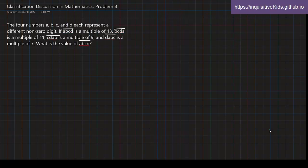Alright, so A, B, C, and D, they each represent a different digit that's not zero. So they're all different, they can't be the same digit.